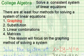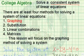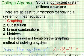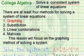Now we want to solve a consistent system of linear equations. Consistent means that we get a nice answer — one x and one y value. There are at least four methods for solving a system of linear equations: the graphing method, the substitution method, linear combinations, and matrices. This lesson will focus on the graphing method of solving a system.